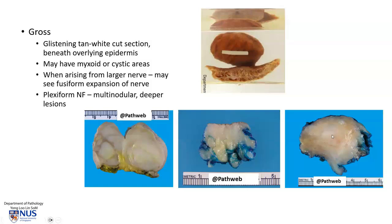Here is yet another example, and again we see this glistening appearance. There may be some myxoid areas, which kind of look translucent or cystic, especially if the lesion is larger. And when neurofibromas arise from larger nerves, they may show a fusiform expansion — kind of like a widened diameter of the nerve.